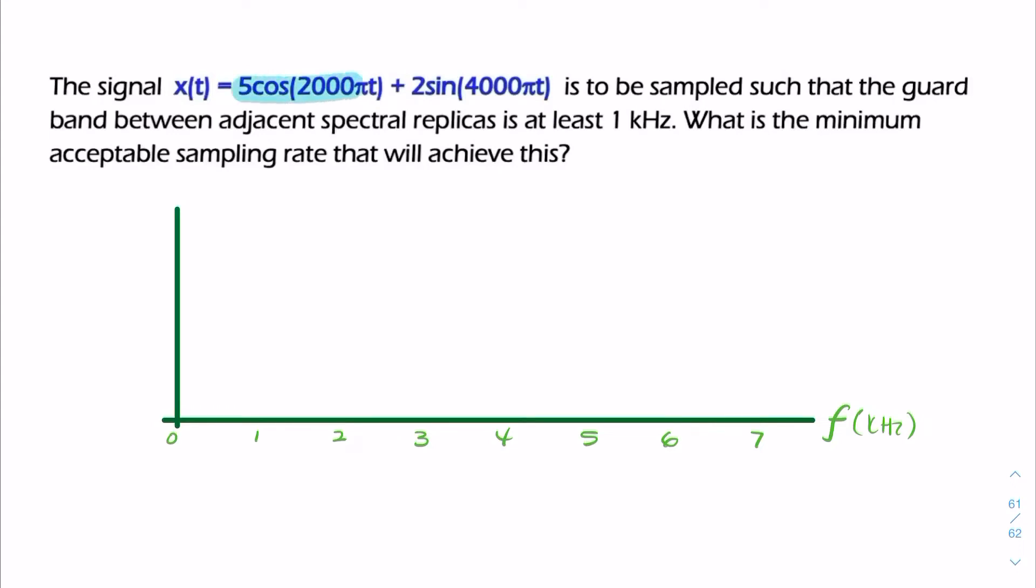So in this question, we have a cosine and a sine added together, and we're asked for a sample rate, but not the Nyquist rate, because we're oversampling. So we want a rate that is 1 kilohertz higher than the Nyquist rate.